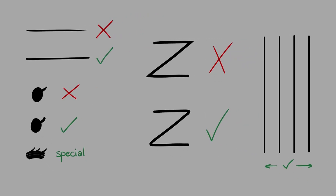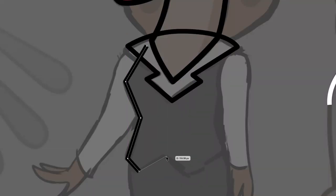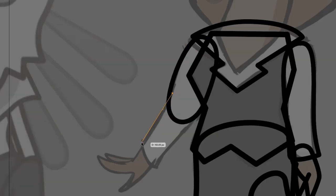Something subtle: outlines are not all the same thickness. There are more than two thicknesses, but for the most part you'll have a regular line and a thinner line. The head and the main body have the thick line, and other parts are thinner.